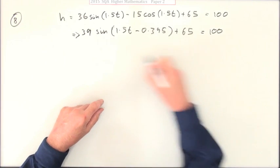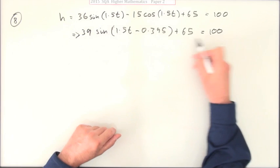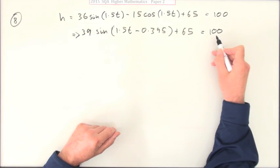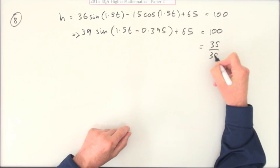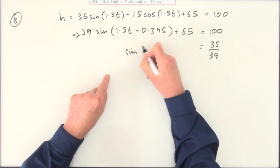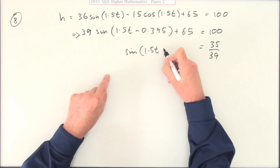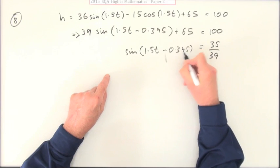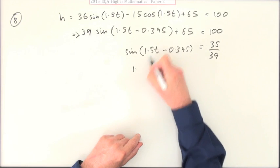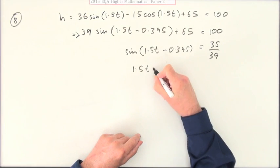Right. So just get rid of all the bits and pieces. So take the 65, I'll do two at once. Take the 65 across and subtract. That'll be 35. Divide by then 39. So it's 35 over 39. That's where this sine part comes to. I've got 1.5t minus 0.395. Now I can get what the angle comes to.